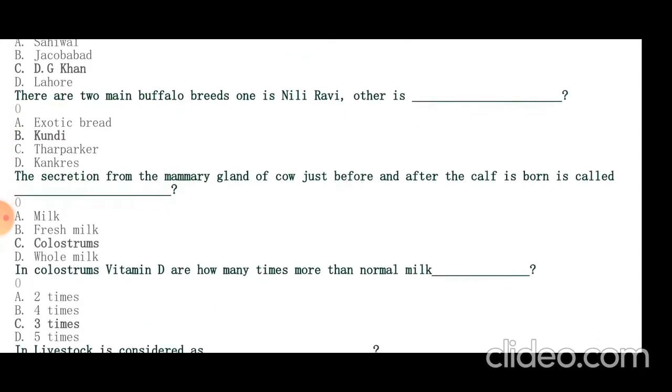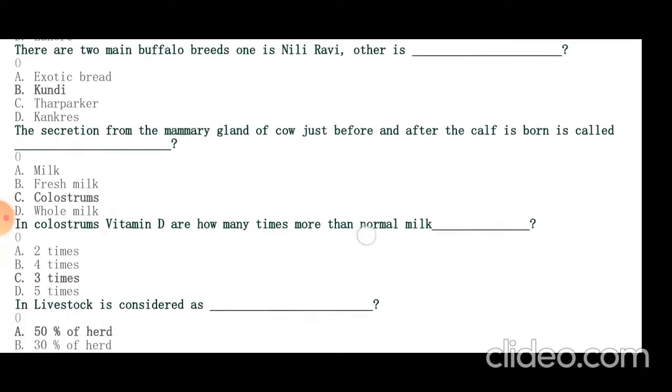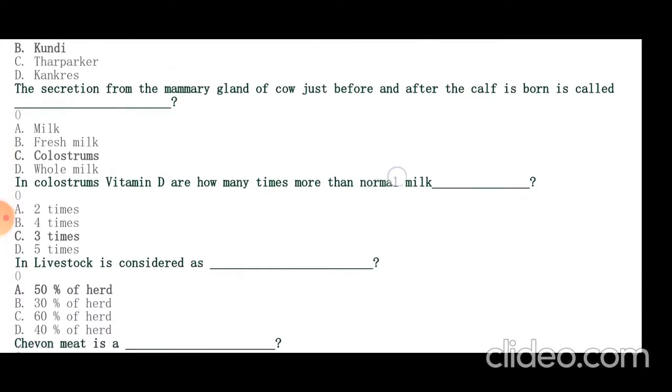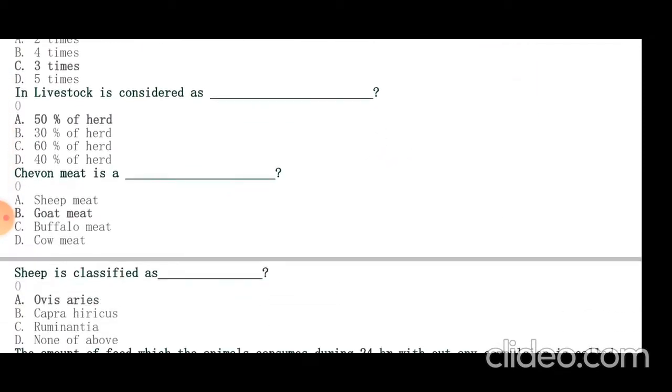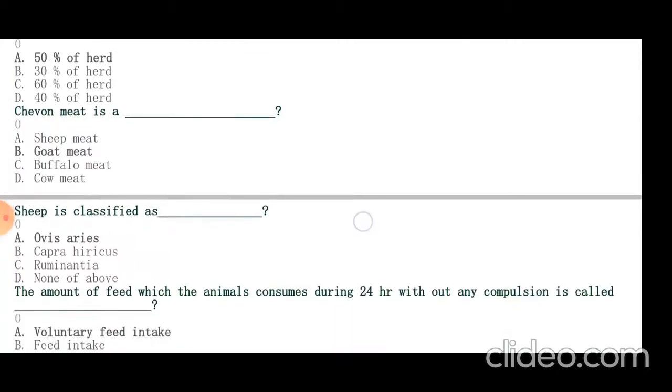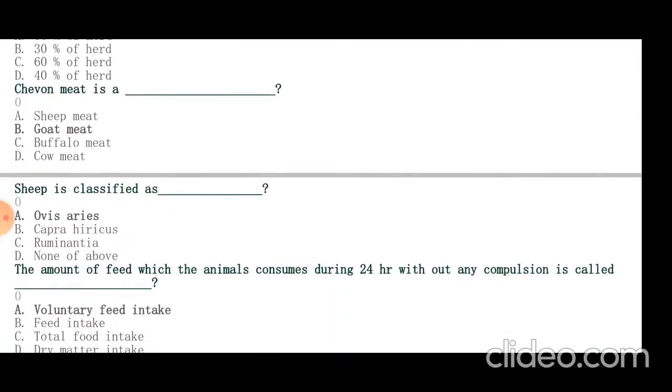In colostrum, vitamin D is three times more than normal milk. In livestock, 50% is considered of herd. Chevon meat is meat of goat. Sheep is classified as Ovis aries. Capra hircus is name of goat.